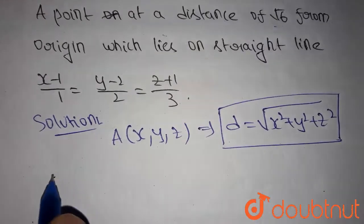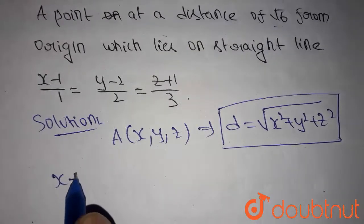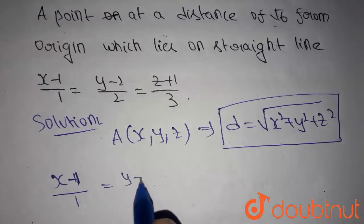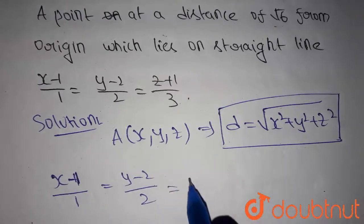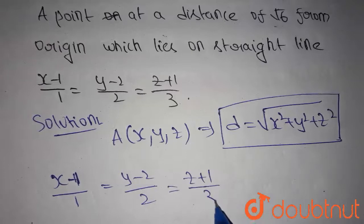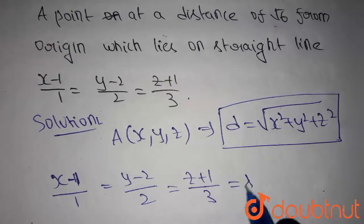The given straight line is (x - 1)/1 = (y - 2)/2 = (z + 1)/3. Let's take this equals to lambda.